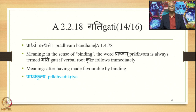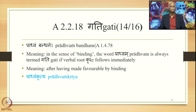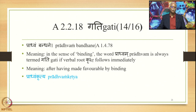The next Sutra stating the Gati Saudhnya is Pradvam Bandhanai, 1478. In the sense of binding — Bandhanai — the word Pradvam is always termed Gati if verbal root Kuru follows immediately. When the meaning 'after having made favourable by binding' is to be conveyed, Pradvam is the Gati and Kugati Pradayaha applies. Derivation: Pradvam plus Su plus Kuru plus Tva plus Su; Su is deleted, Tva is substituted by Lepa, augment Tuk is added, giving the form Pradvam Kritya, meaning 'after having made favourable by binding.'